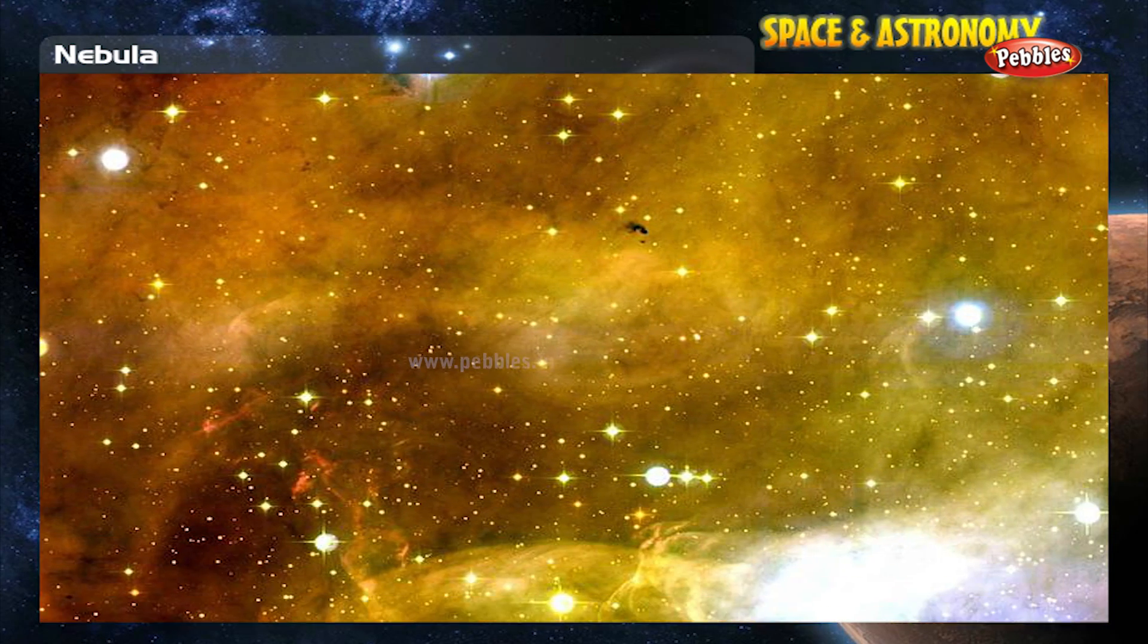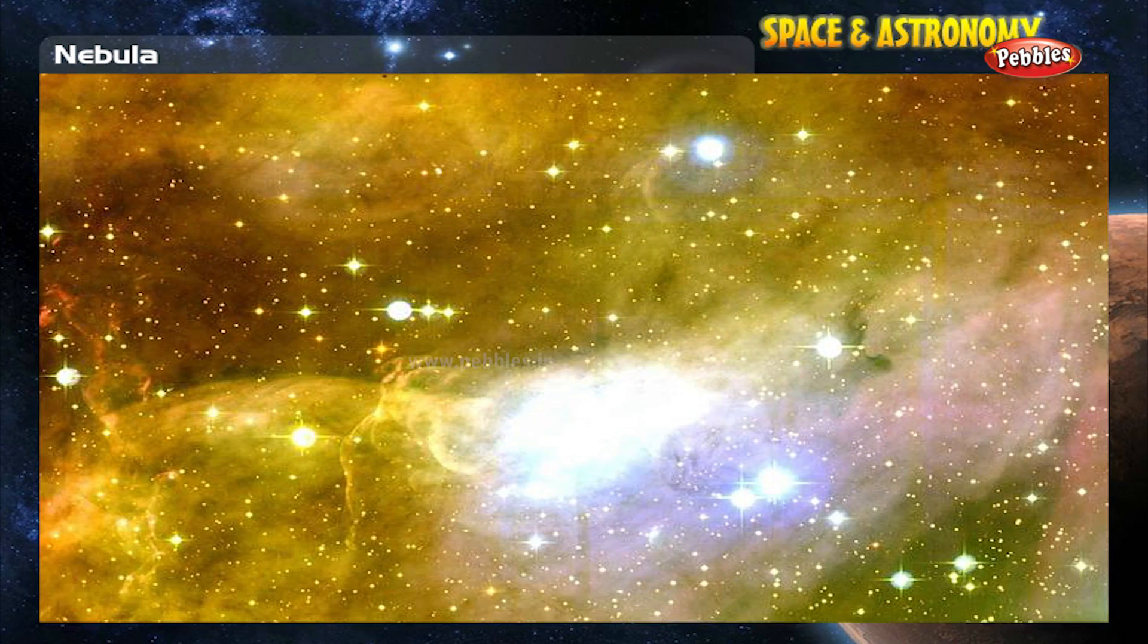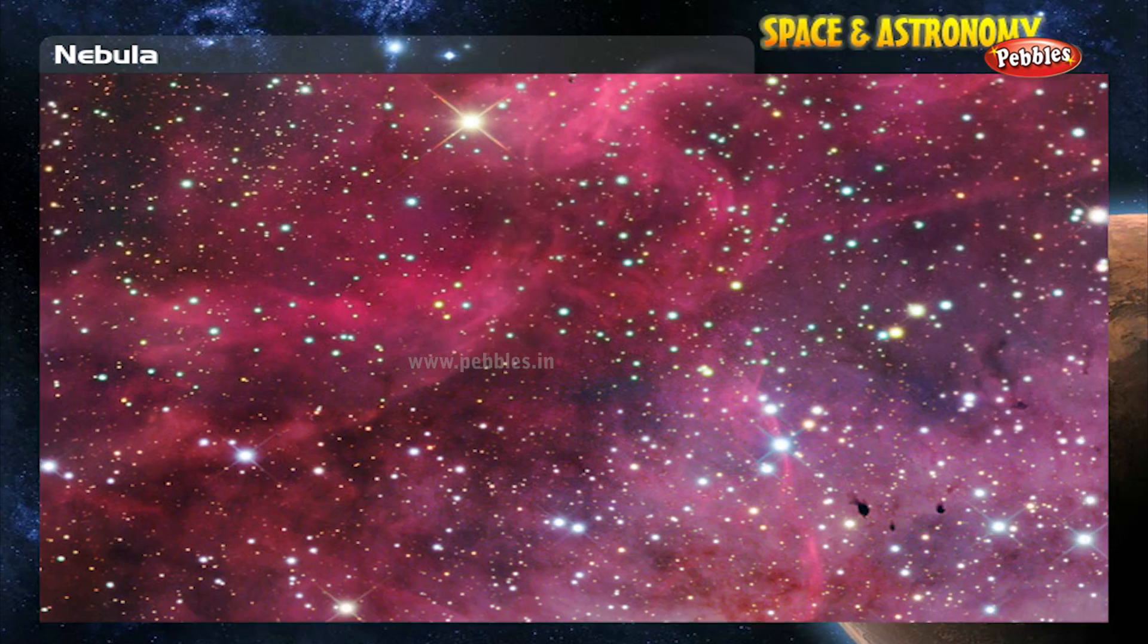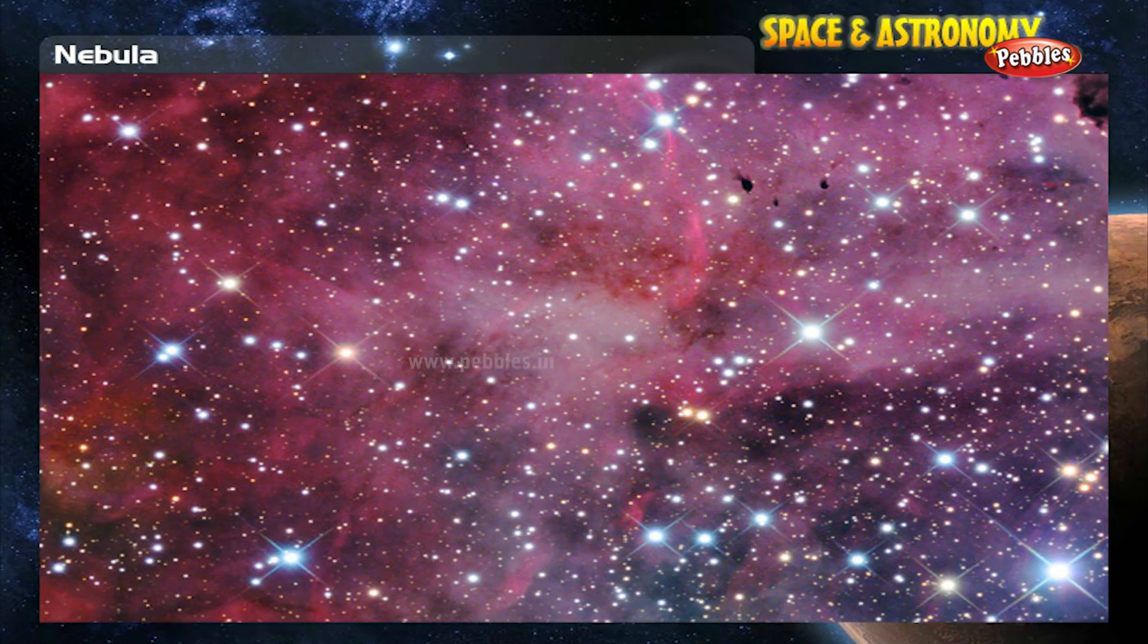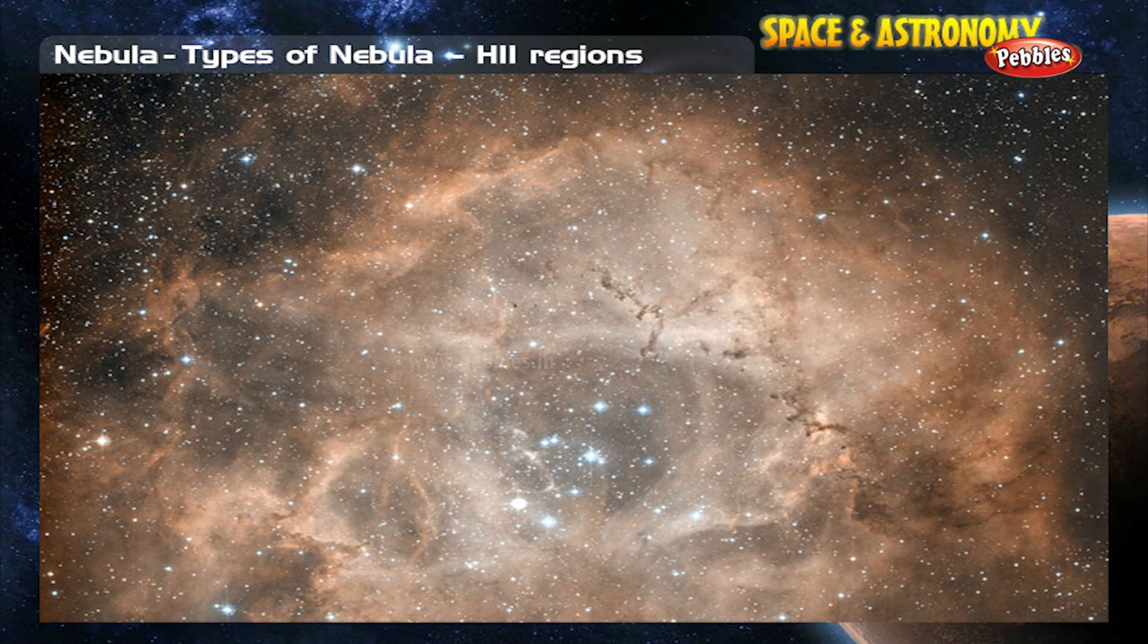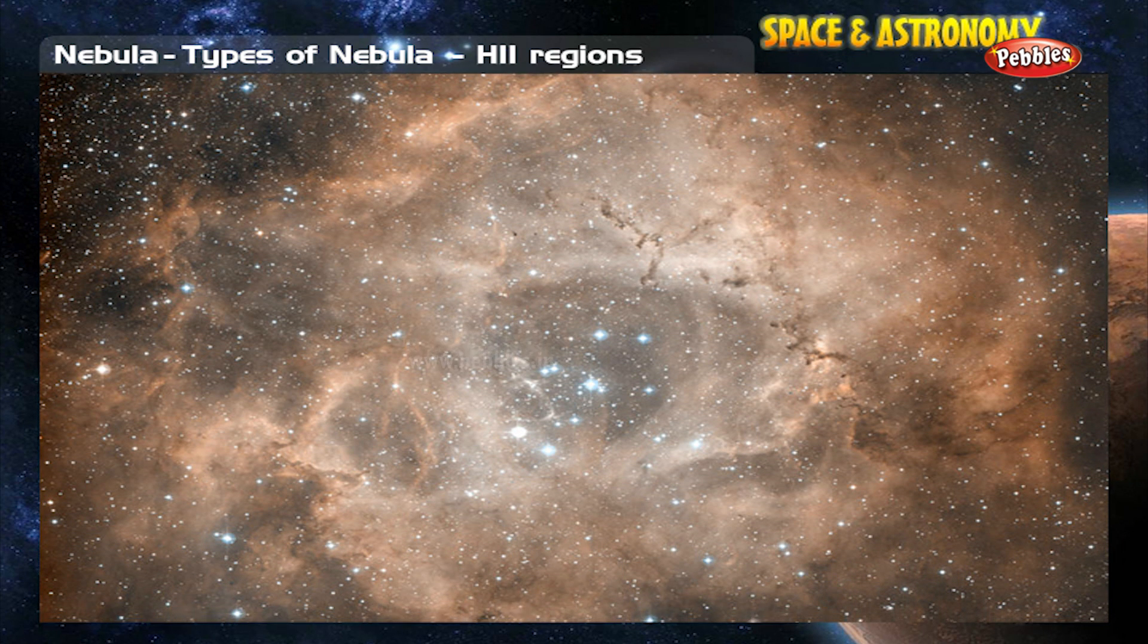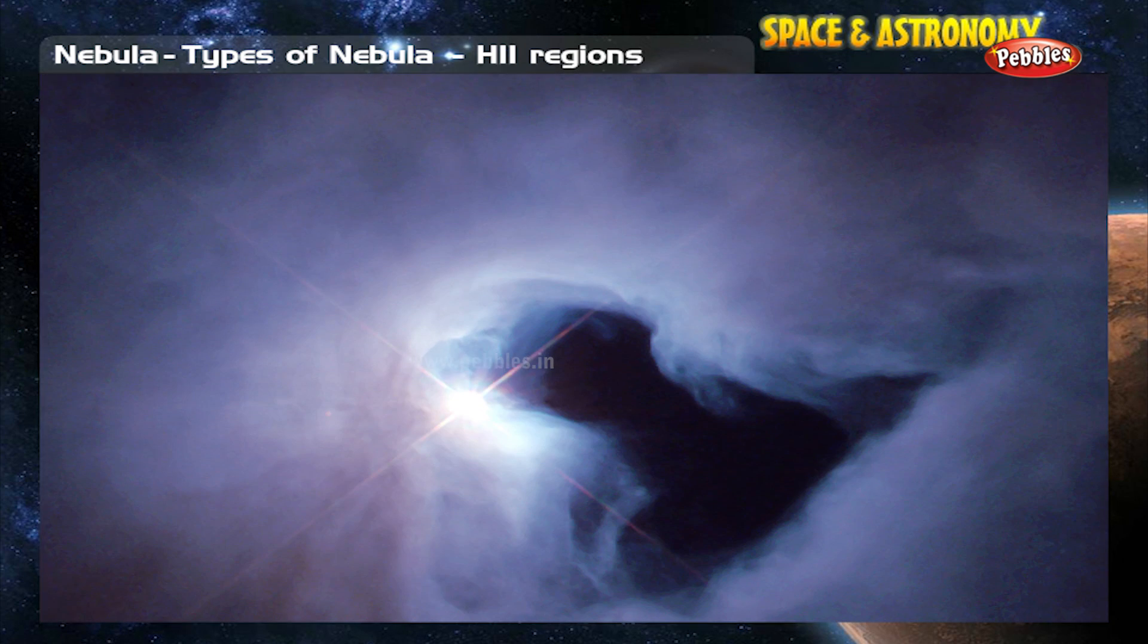Nebulae are classified into four major groups. In the past, before galaxies were known, they were classified as spiral nebulae. First, H2 regions which encompass diffuse nebulae, bright nebulae and reflection nebulae.